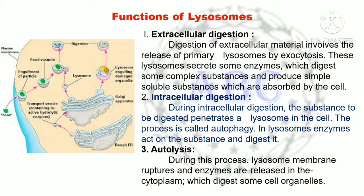During intracellular digestion, the substances to be digested penetrate a lysosome in the cell. This process is called autophagy. In lysosomes, enzymes act on the substance and digest it. The third function is autolysis — during this process the lysosome membrane ruptures and enzymes are released into the cytoplasm, which digest some cell organelles.